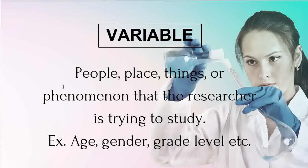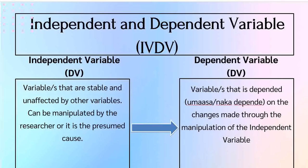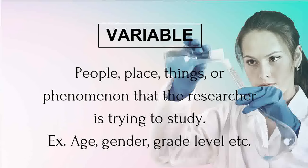Ibig sabihin, yung variable, ito yung mga bagay, mga tao, mga pangyayari na nais mong pag-aralan sa iyong study. Halimbawa ng mga variable ay yung age, gender, grade level, etc. Pero ano nga ba ang independent at dependent variable? Kailan natin masasabi na ang isang variable ay dependent at independent?